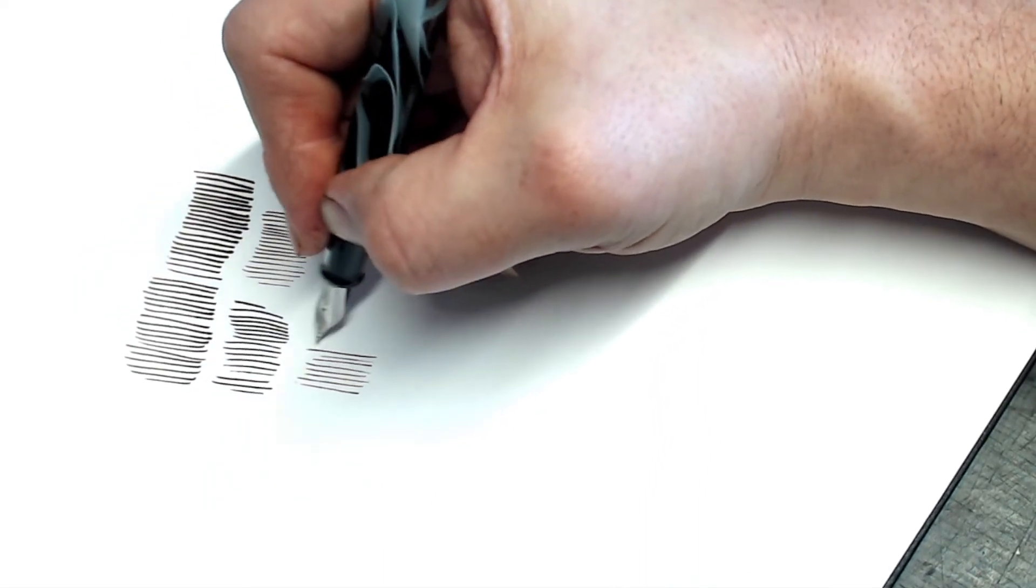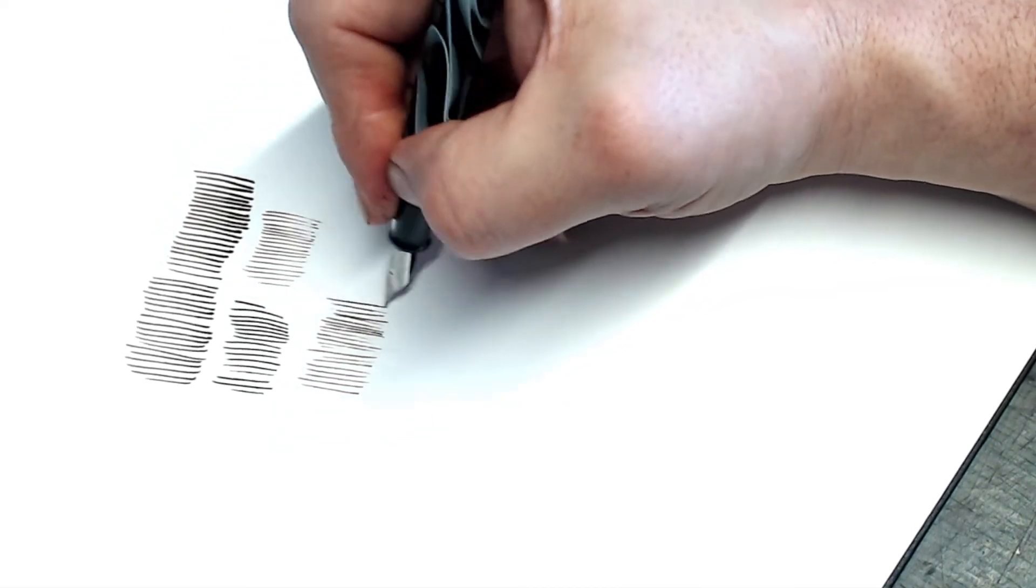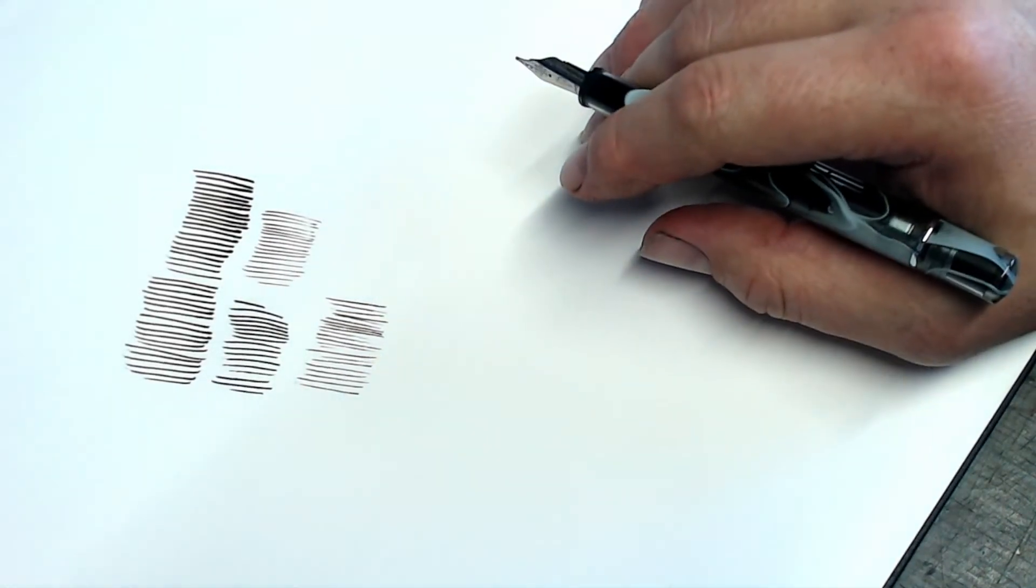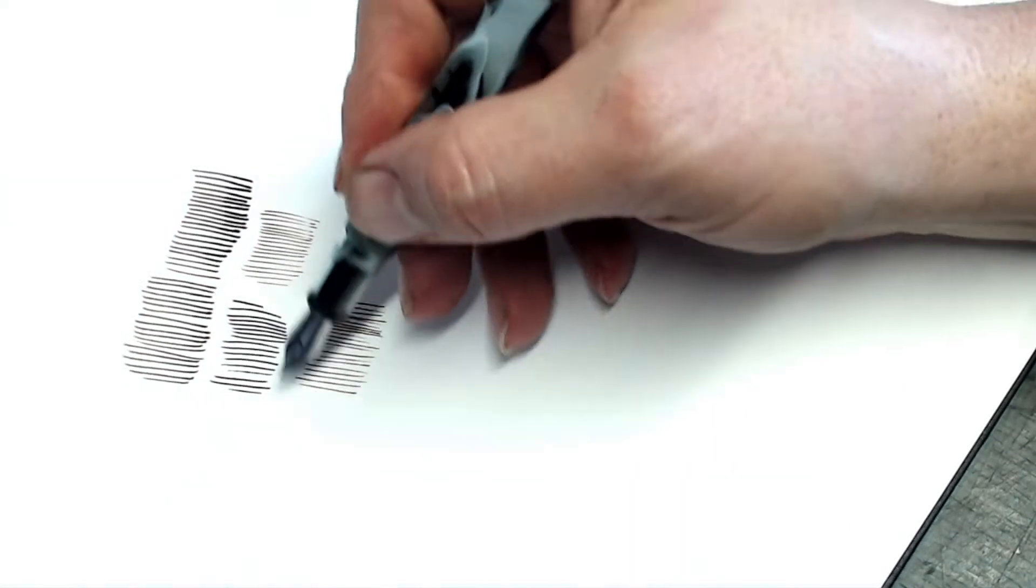So I'm barely making contact with the paper. It allows me to work a little bit lighter, put down a thinner line. Again, it's one of the reasons why I like fountain pens. Even a pen that has no flexibility to it, if you have a light touch, you can sometimes tease out a slightly lighter line, which is good for sketching.